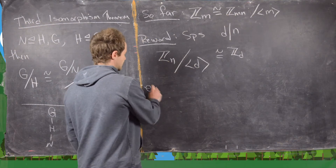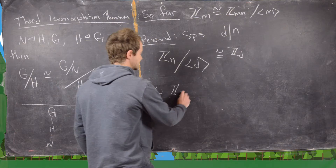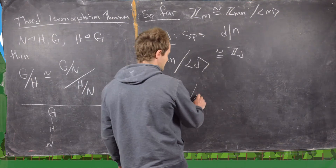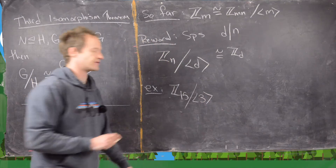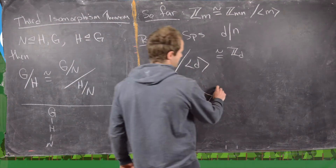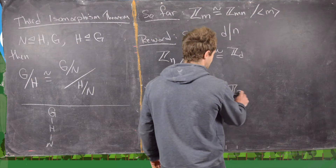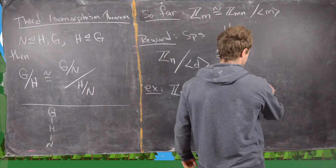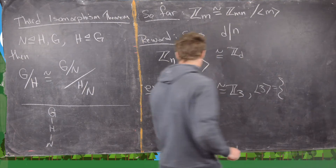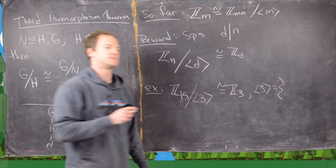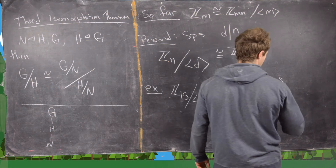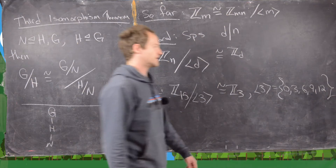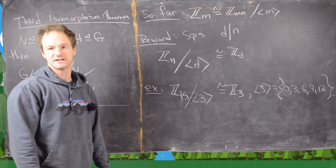Let's look at an example. If we take Z_15, the divisors of 15 are 3 and 5. Let's mod out by the cyclic subgroup generated by 3 — by the result we just proved, that's isomorphic to Z_3. The cyclic subgroup generated by 3 inside Z_15 is {0, 3, 6, 9, 12}, and we don't need more elements because 15 equals 0.